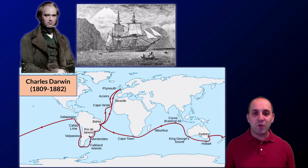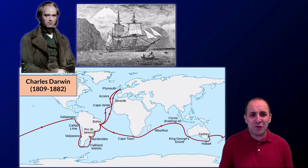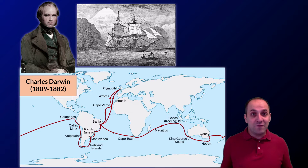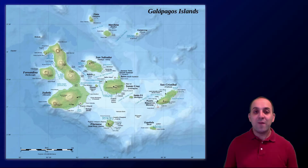The opportunity came for Darwin to become the ship's naturalist on board the HMS Beagle, which was going on a trip around the world. This voyage took something like five years. As the ship's naturalist, Darwin was responsible for collecting specimens of different organisms as the ship traveled from place to place, giving him a lot of time to collect data and think about what that data meant.